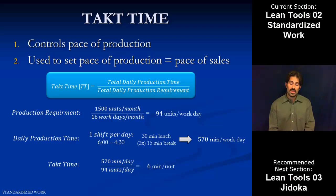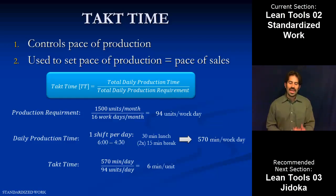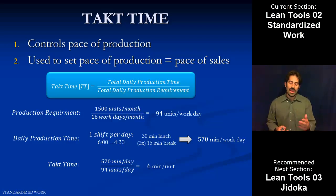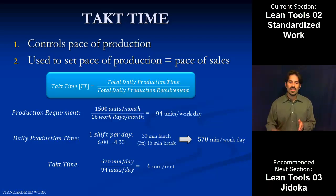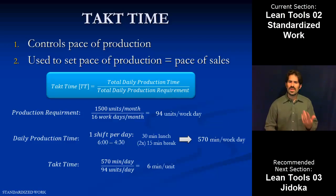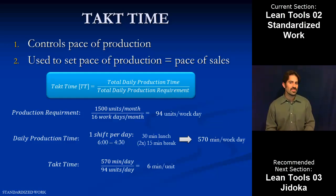If we spend any more than 6 minutes, we're going to fall behind. If we spend less than 6 minutes, we're going to be ahead, and at the end of the day people are going to be standing around. The idea of takt time is: if we have an assembly line or a process where a unit is coming off at the end every 6 minutes, then at the end of the month we'll have built exactly 1,500 and provided our customer exactly with what they want. Think of takt time kind of as a metronome — the internal clock for our process that lets us know if we're ahead or behind, the actual representation of customer demand.